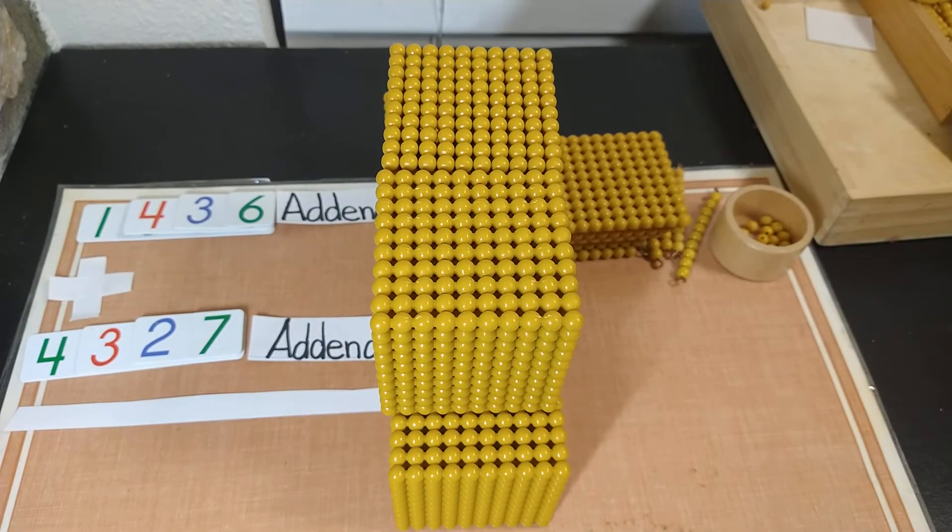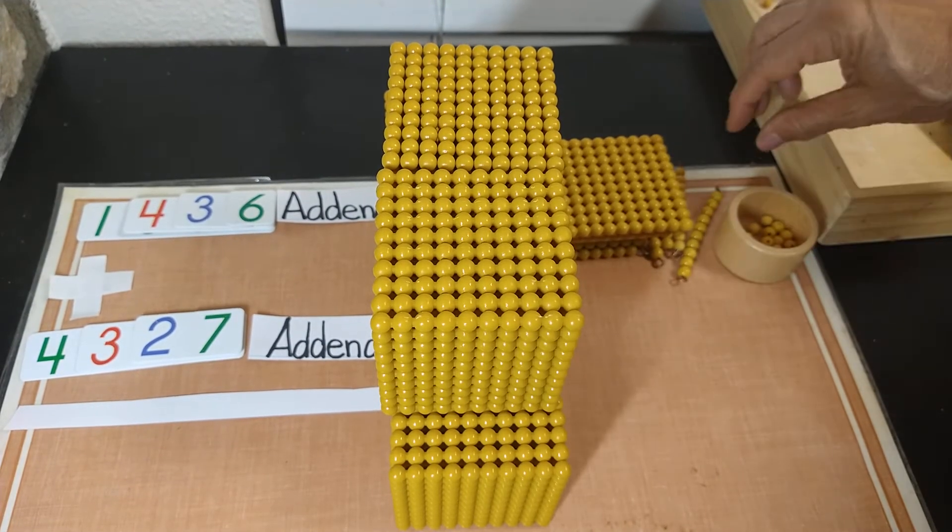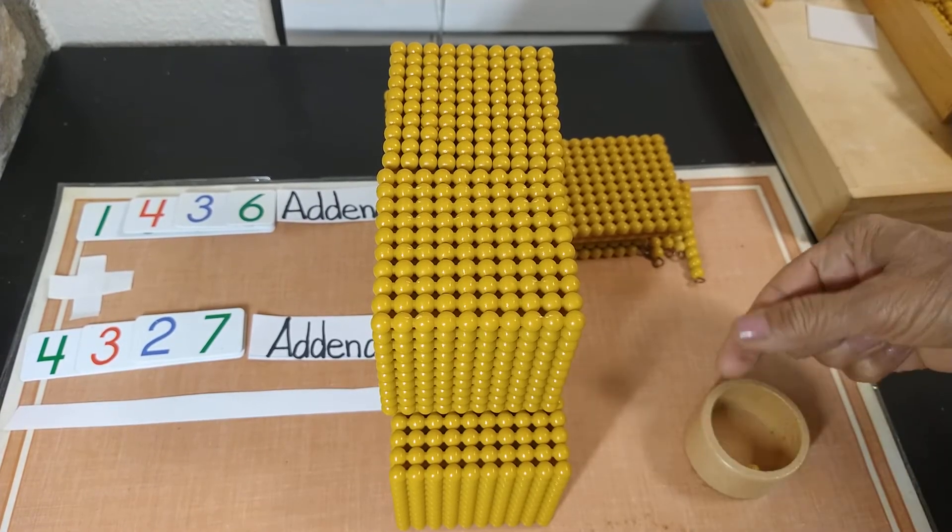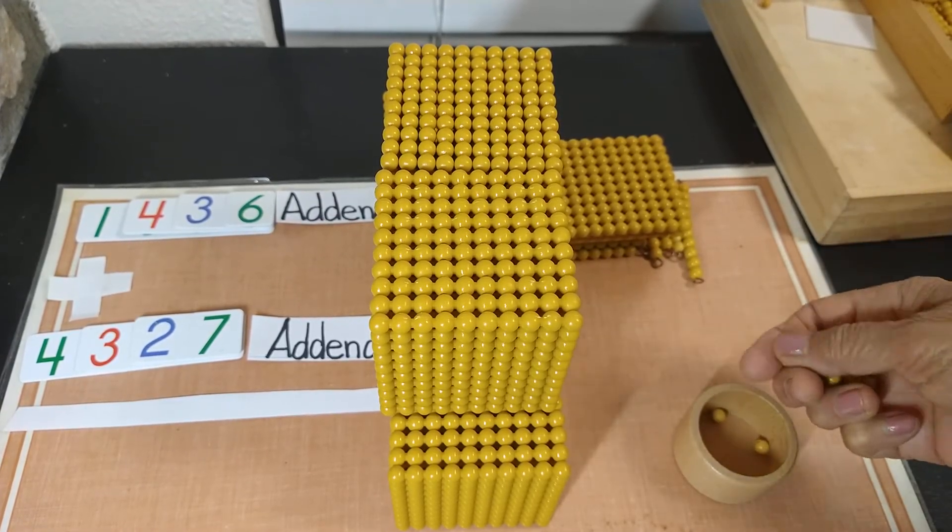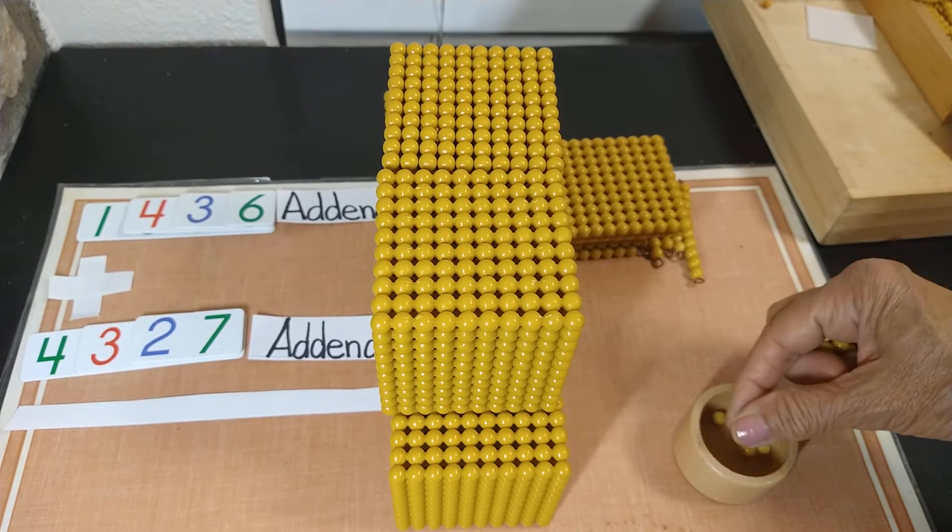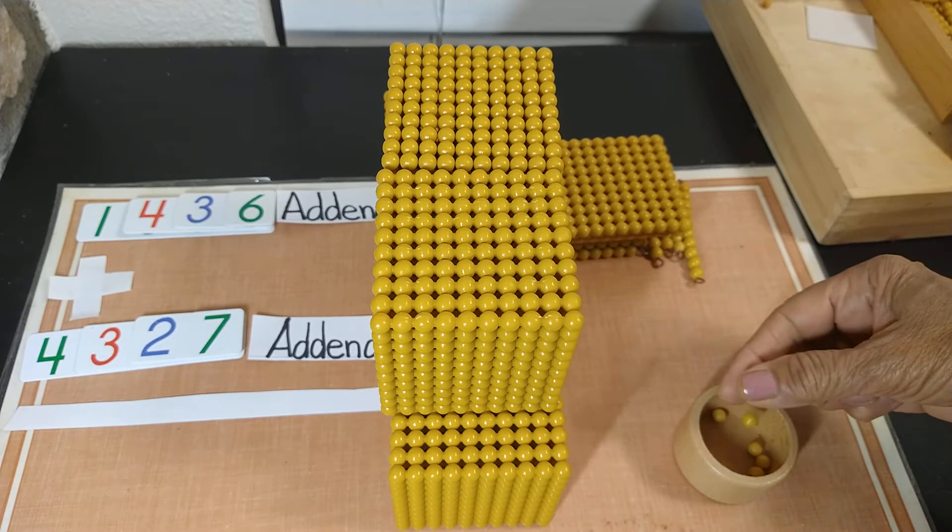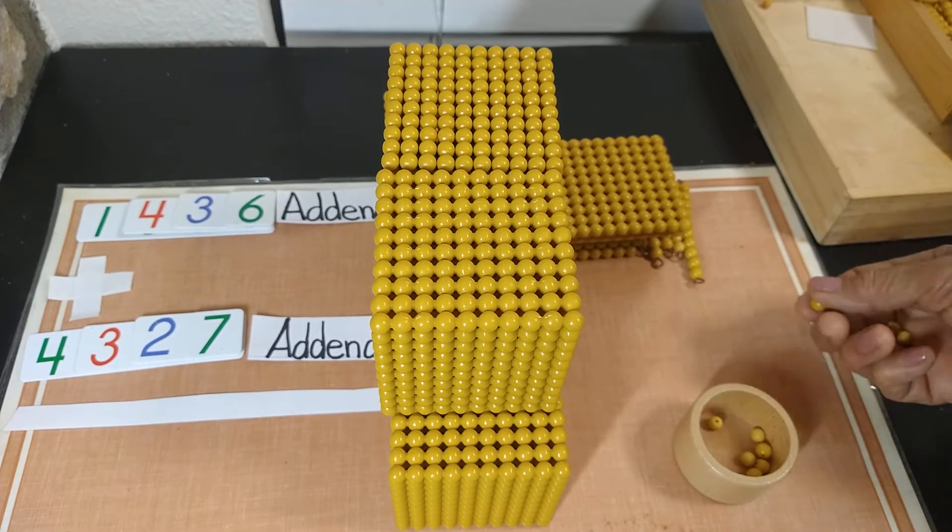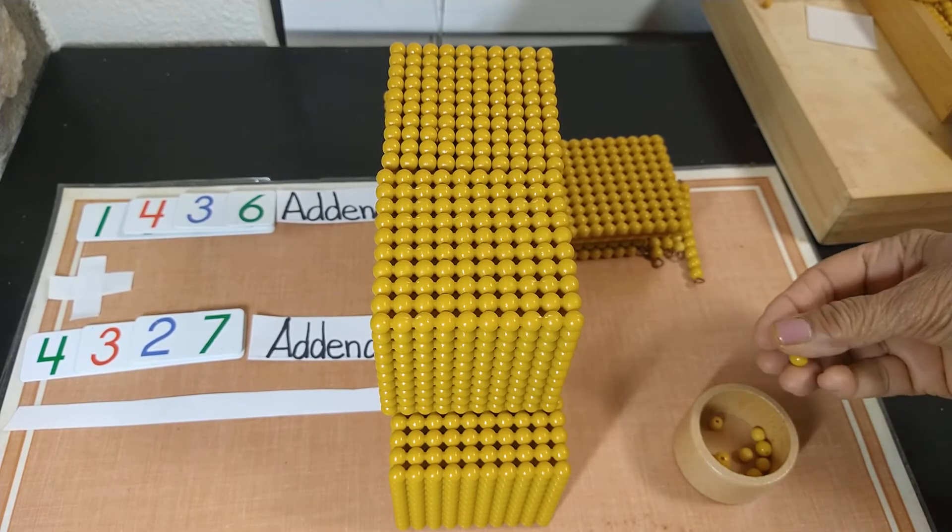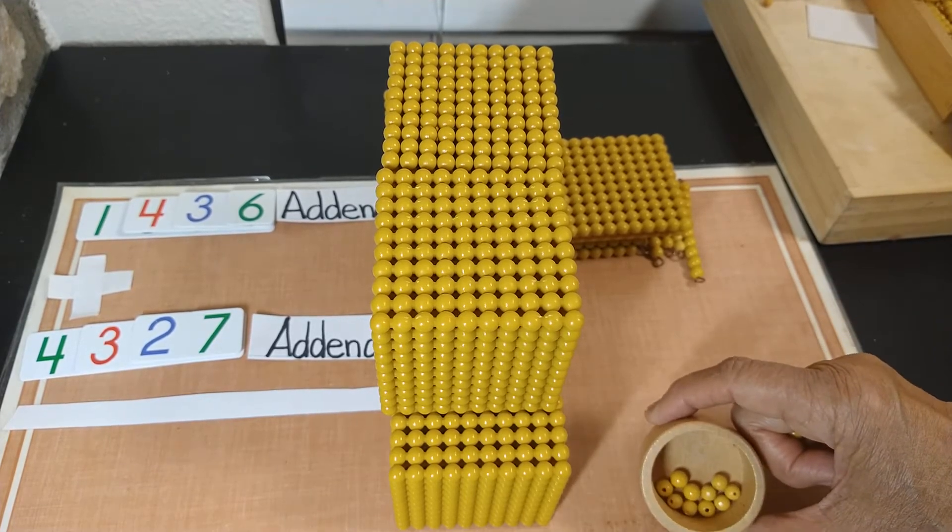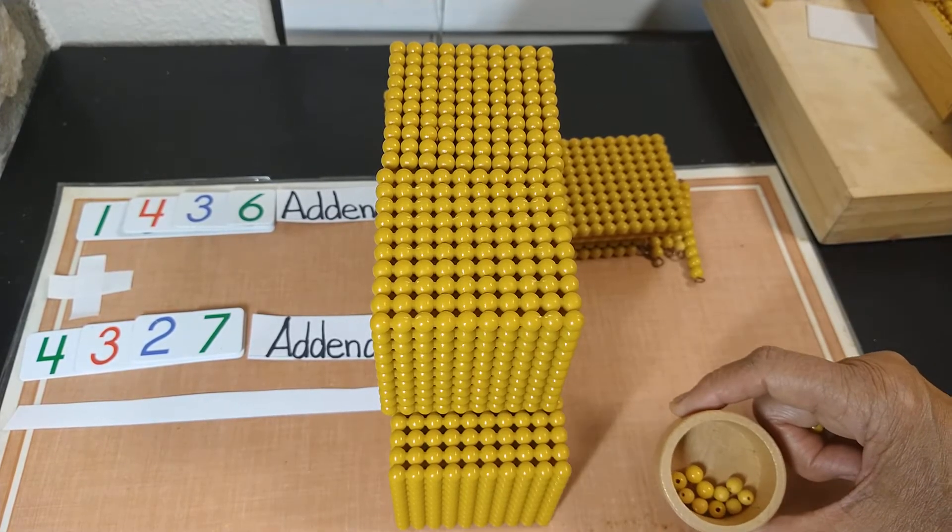So we always start counting with the units. So let's count together. 1 unit, 2 units, 3 units, 4 units, 5 units, 6 units, 7 units, 8 units, 9 units and 10 units. When we reach 10 units, we need to stop and exchange.